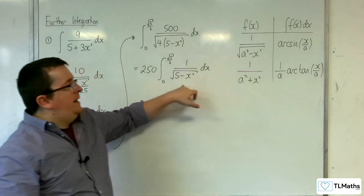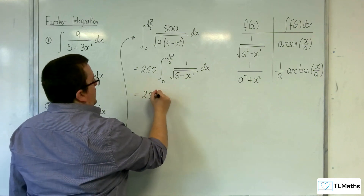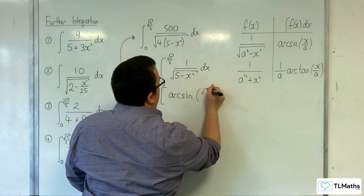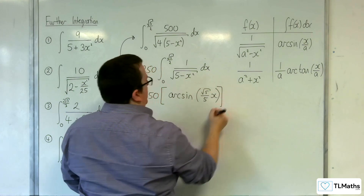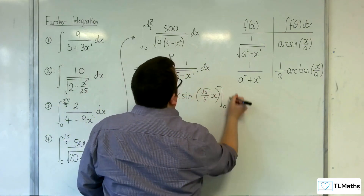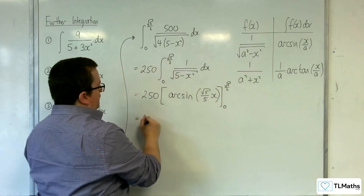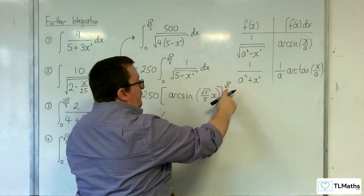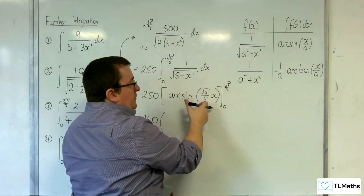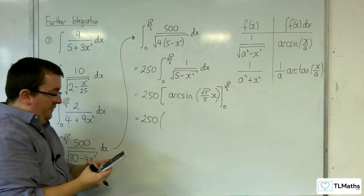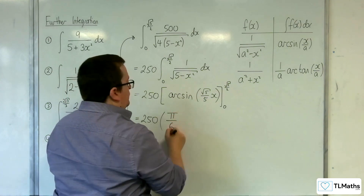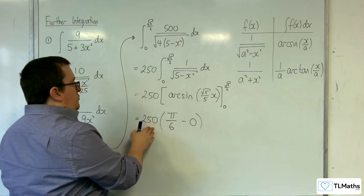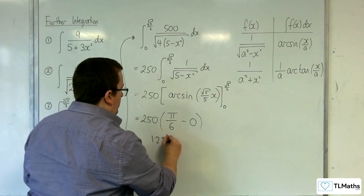You can now see it's in that form where a is going to be root 5. So 250 times arc sine of x over root 5, which is the same as root 5 over 5 times x after rationalising the denominator, integrated between 0 and root 5 over 2. Arc sine of root 5 over 5 times root 5 over 2 — root 5 times root 5 is 5, divided by 5 is 1 — so it's just arc sine of 1 half, which is pi over 6. Substituting in 0, arc sine of 0 is 0. So we get 250 times pi over 6, which is 125 pi over 3.